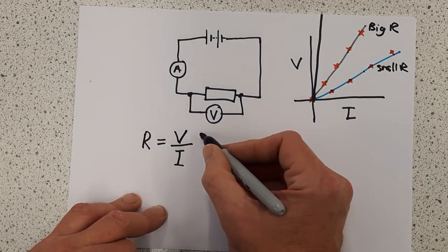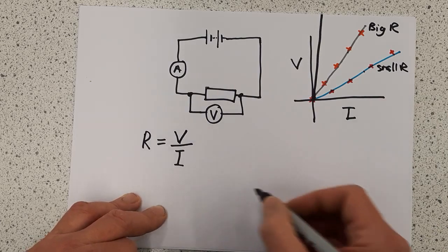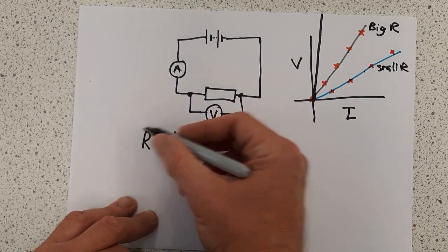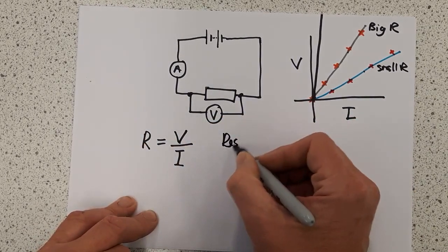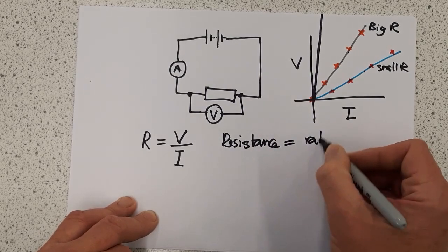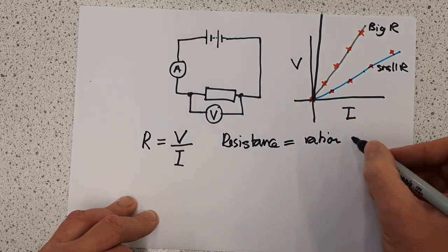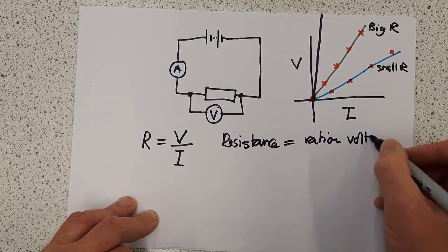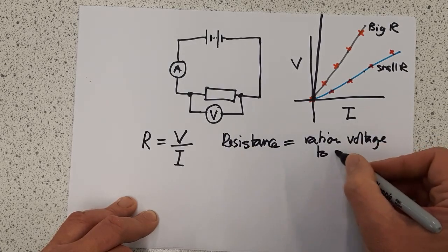Now gradient equals rise over run or y over x. So I end up with this relationship here where resistance is actually defined as the ratio of voltage to current.